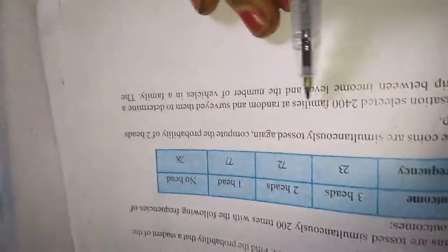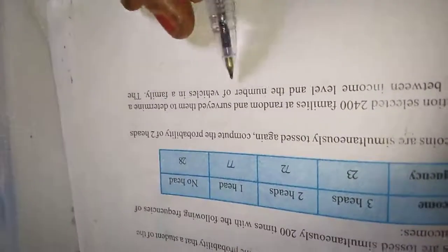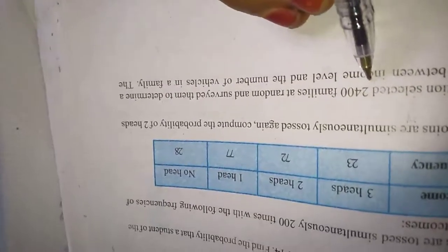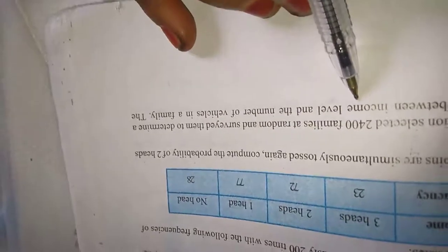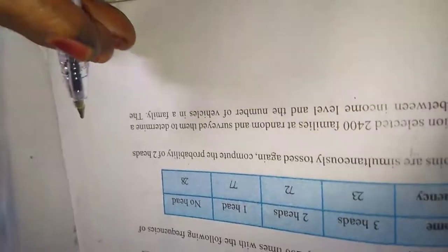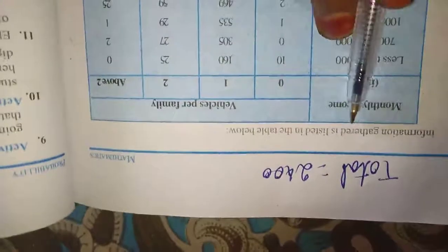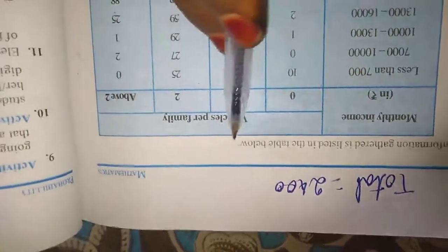Hi dears, in last class we completed up to exercise 5.1 foursomes. Now we will move to the fourth of the sum. I am going to do in the book. You have to copy in note. An organization selected 2,400 families at random and surveyed them to determine relationship between income level and the number of vehicles in a family. The organization data is listed in the table below.